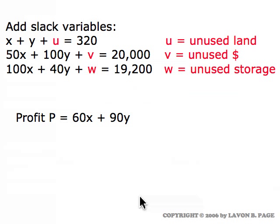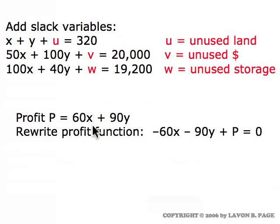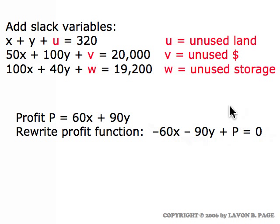So we have gone from our three constraints to three equations with slack variables, and we also have our profit function, which we're going to turn into an equation. We rewrite the profit function by bringing the X and Y terms to the left, written in the form: minus 60X minus 90Y plus P equals zero. This is sometimes called the standard form — all variables on the left, a raw number on the right.